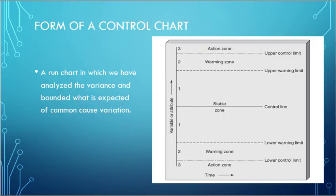So the basic tool that we're going to use is called a control chart, and it's essentially a run chart where we've done some pretty thorough analysis of the variance, and we have bounded what is expected in common cause variation.